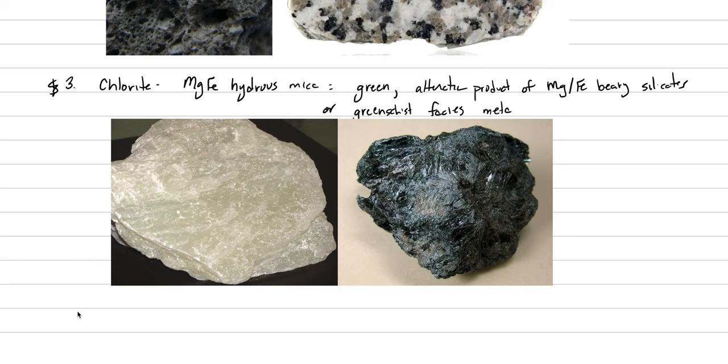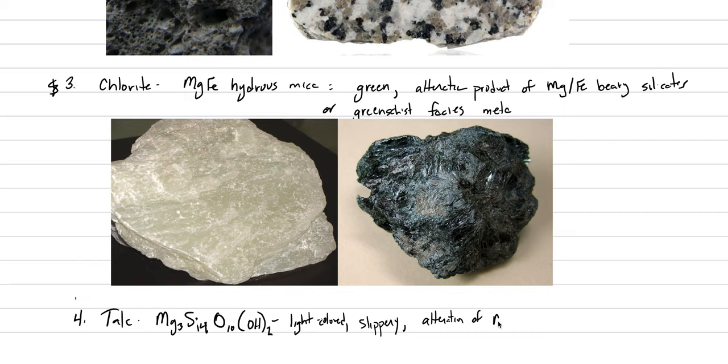And the last one we're going to write about is talc, which is shown in this picture here. So number four is talc. Here I actually will have you memorize the entire chemical formula, Mg3Si4O10(OH)2. And this tends to be light colored. And one of the dead giveaways is that it is very slippery. It's number one on Mohs hardness scale. It's so soft because of those TOT held together by van der Waals bonds. And talc forms by alteration of magnesium-bearing rocks. An important magnesium-bearing rock environment is the mantle. And so we could think of talc being associated with altered mantle.